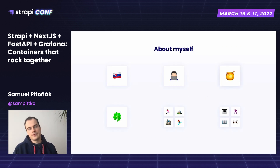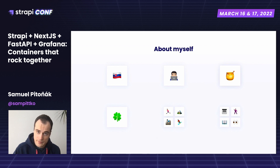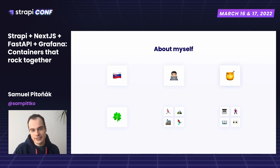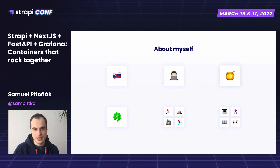A little bit about myself: I am from Slovakia, developing web projects for Jamstack agency Bijamas. I'm also interested in climate tech, so you'll most likely find me tweeting about the topic or doing side projects. There are many other interests I have, but I think we don't have time for those right now, so let's jump in.